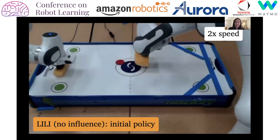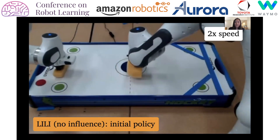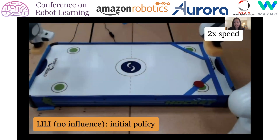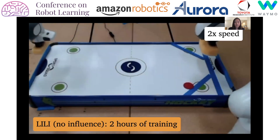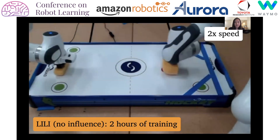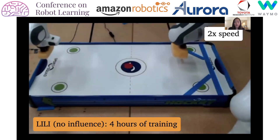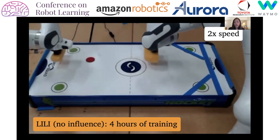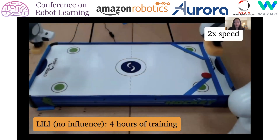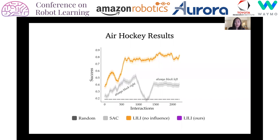We next tested a variant of LILY which optimizes for rewards over a single interaction, and hence doesn't influence the opponent. It begins to learn to block by anticipating the opponent's strategies. Near the end, the ego agent can block almost perfectly, but doesn't always get the bonus reward for blocking the left, because it's not explicitly trained to do so. LILY without influence blocks successfully about 90% of the time.